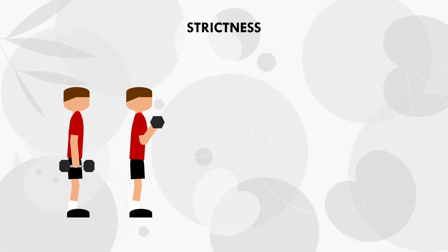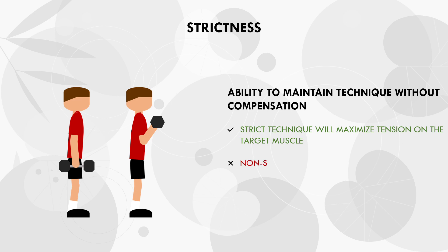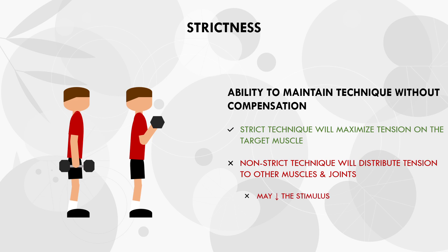Strictness is hard to define, but it generally refers to the ability to maintain technique without compensation. This means we only want movement at the relevant joints and avoid movement at all other joints which aren't directly involved with training that specific muscle. Ideally, we want to execute extremely strict technique in all exercises to ensure tension is focused on a specific muscle group without unnecessarily loading other muscles and joints. Lifting with less strict form allows us to lift heavier loads without necessarily increasing the hypertrophic stimulus, which will induce greater joint stress without providing any additional stimulus - in fact, it will likely result in a worse stimulus.